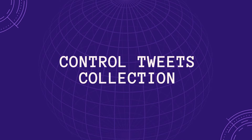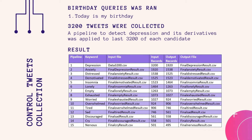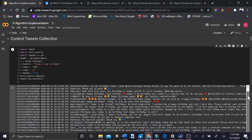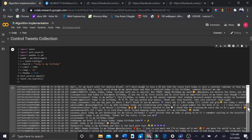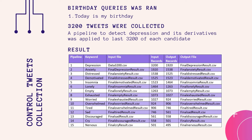Control tweets collection: we ran the query 'today is my birthday' and gathered 3,200 birthday tweets. Afterwards, we followed a similar approach as Angela Lace et al. — applying a pipeline of depression-related words to the last 3,200 tweets of each user. If any user was found to use any of these words in a tweet, it was removed from the dataset. Hence, 495 users were selected at this stage.